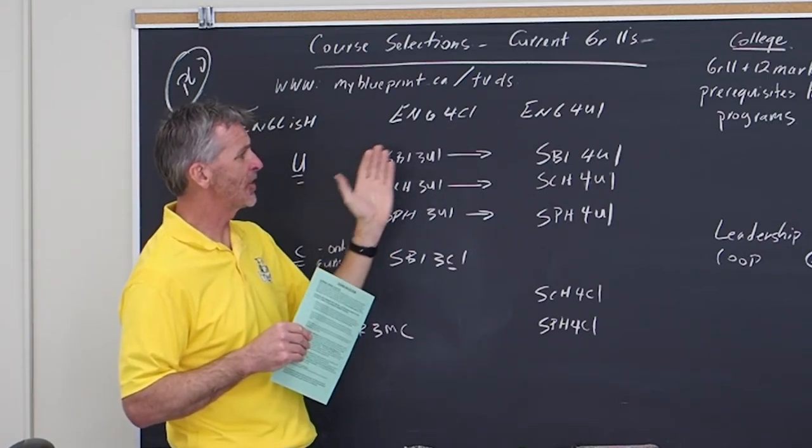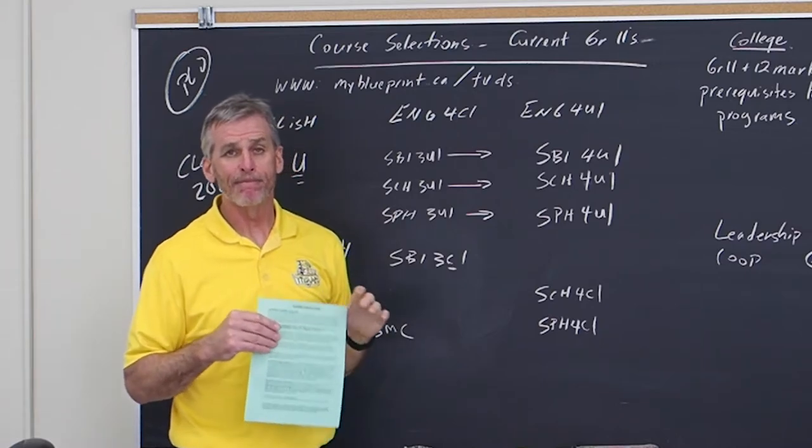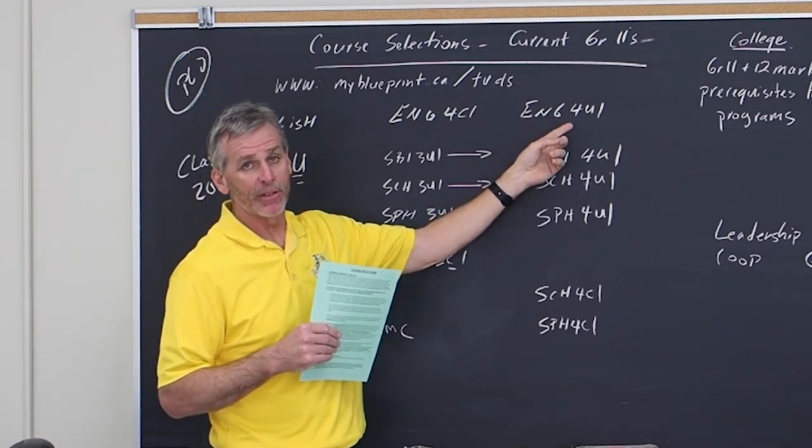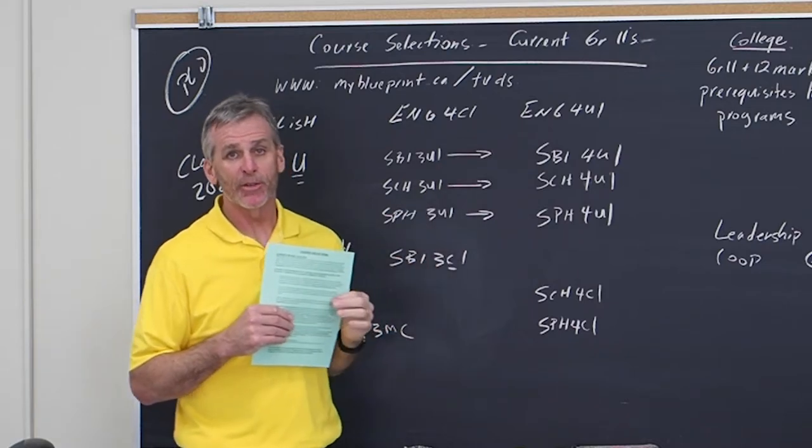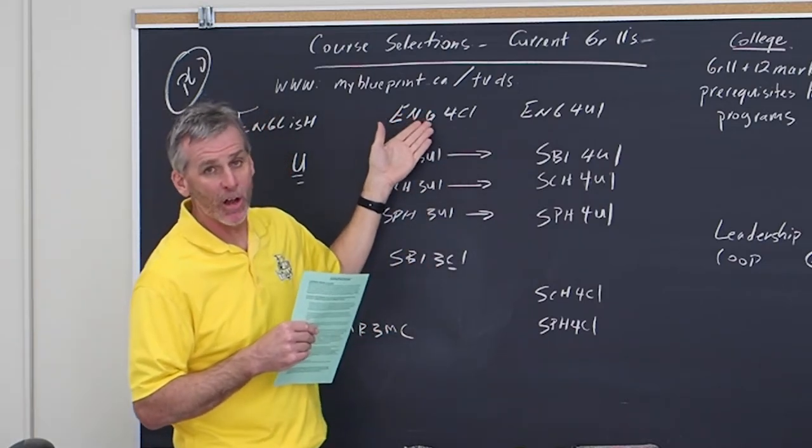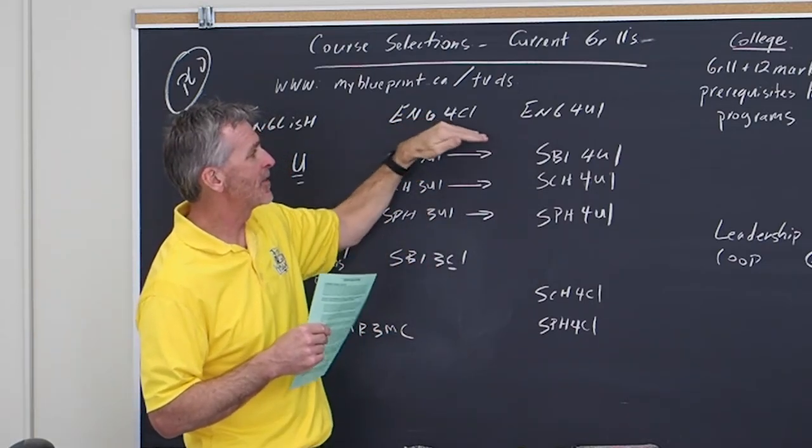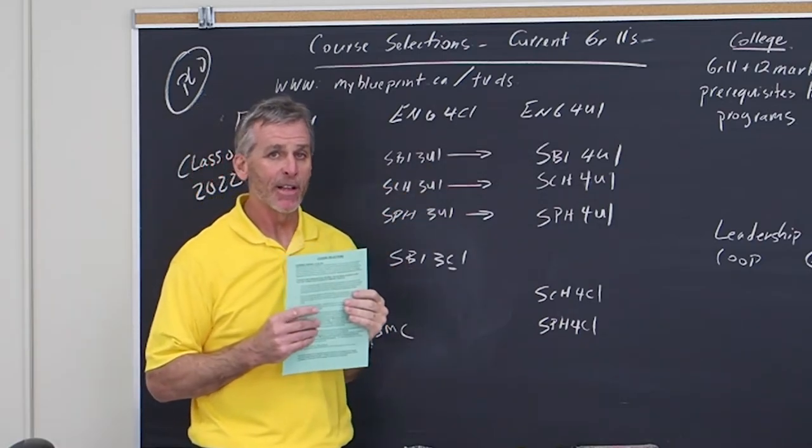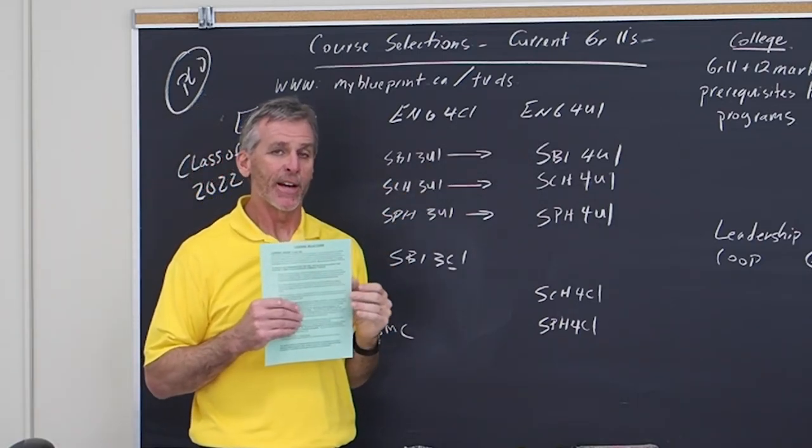So if you've taken the university level grade 11 English, then you're allowed to take the grade 12 university level English. If you've taken the college level English, you're allowed to take the grade 12 college level English. But these pathways are really now self-defined by what you've taken in grade 11. So you want to make sure you're taking the right courses.